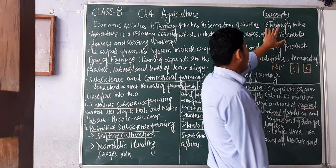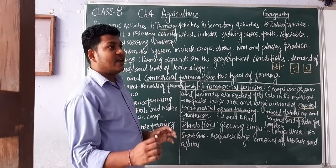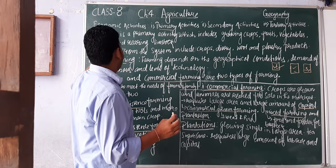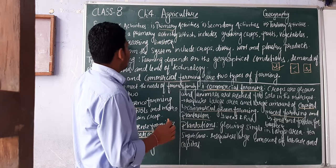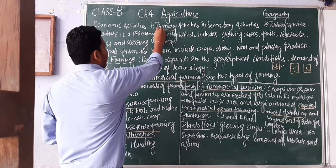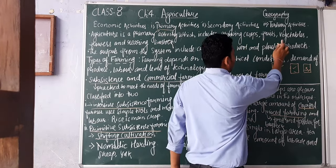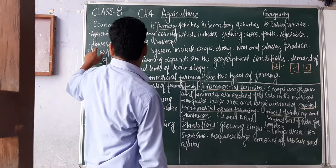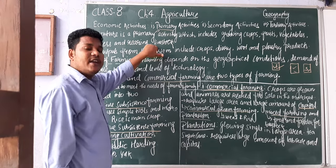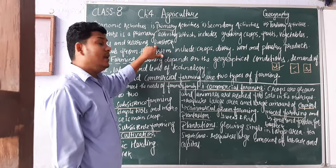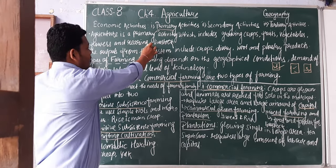Now, what is agriculture? Agriculture is a primary activity. It includes growing crops, fruits, vegetables, and flowers, as well as rearing animals. Rearing animals means herding or raising animals for food — such as for meat, dairy, and eggs.